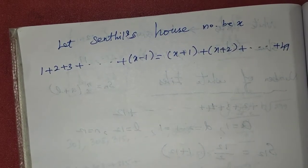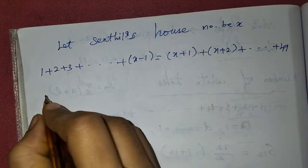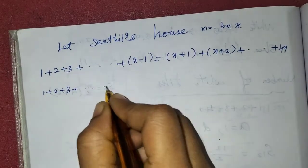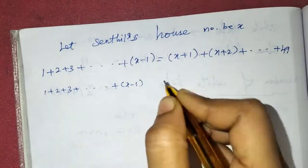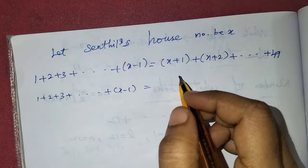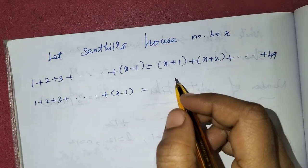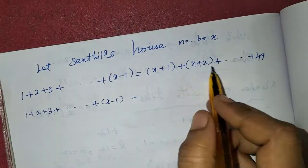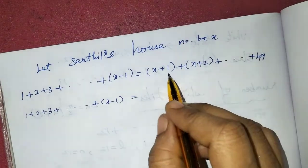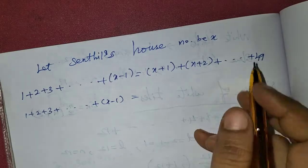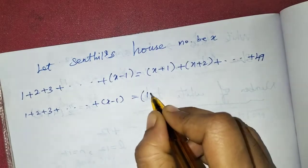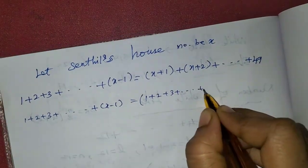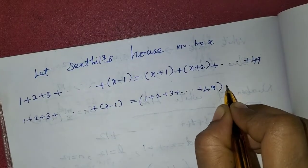First, we need to evaluate 1 plus 2 plus 3 plus ... plus (x minus 1). We apply the sum formula. We also have the total sum 1 plus 2 plus 3 plus ... plus 49.